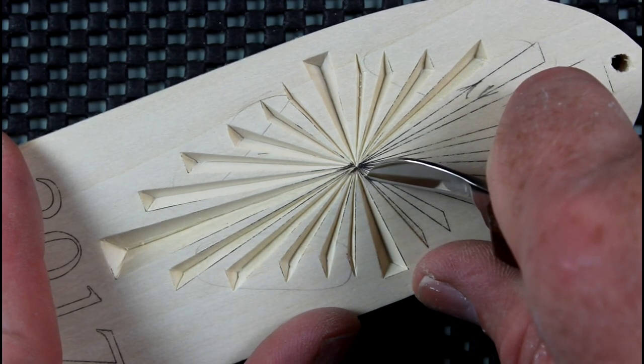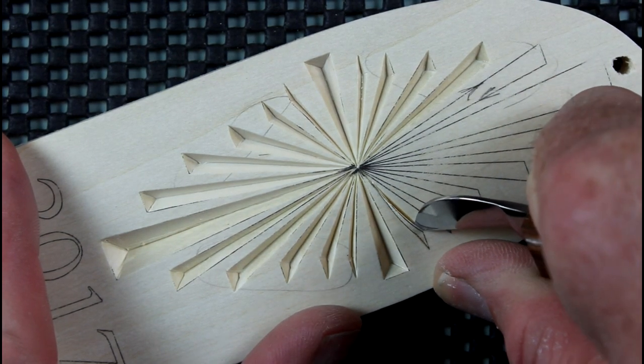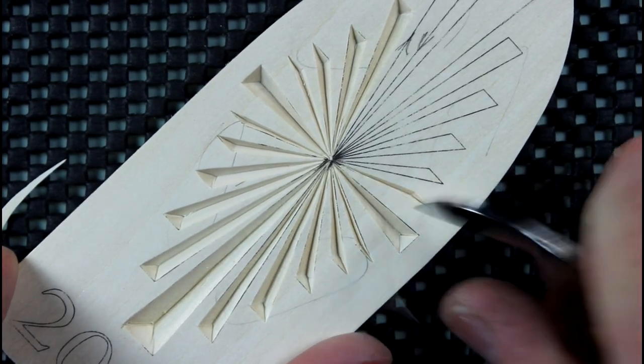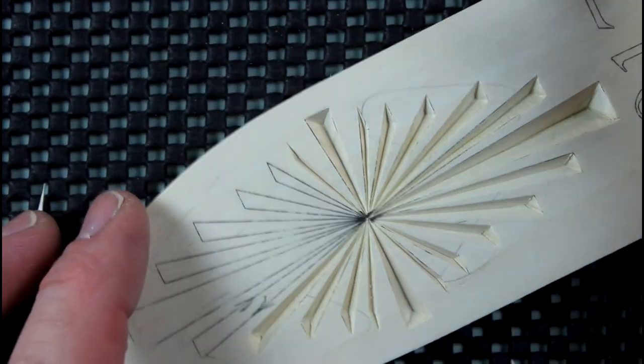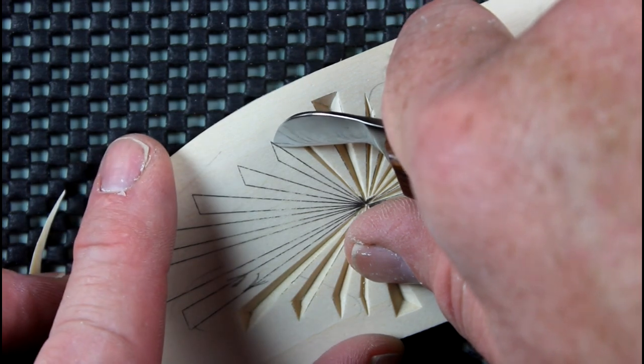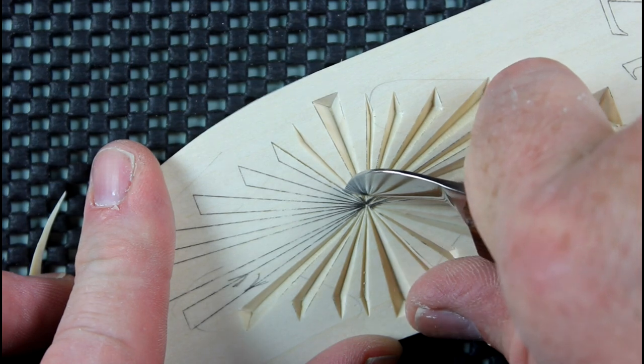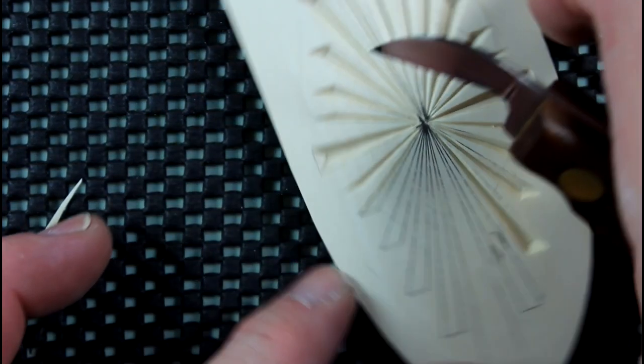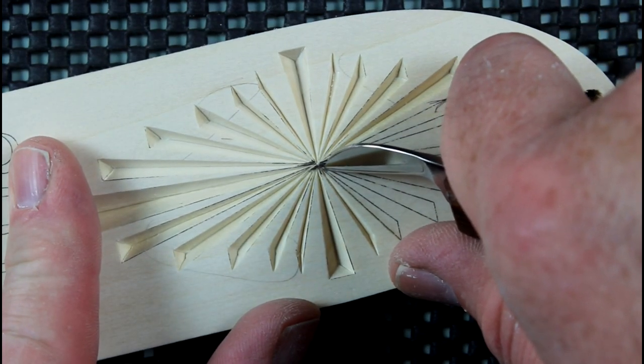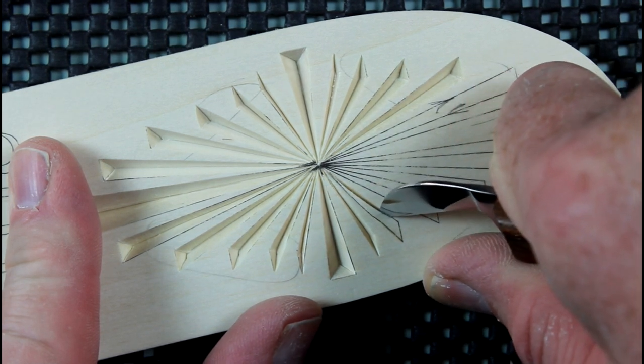We're really going to focus on avoiding chip out in the center of this design where all of the cuts merge. Now to do that, you'll want to have a very light grip on your knife when that cut reaches the center. When you use a light grip, there's no way you can get a deep cut which causes undercutting and leads to chip out. So remember this, when you reach the center, always lighten up your grip on the knife and that'll make for a very shallow cut and it'll avoid chip out.